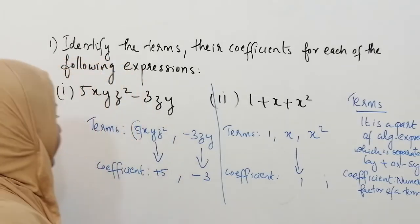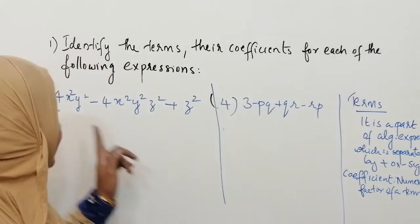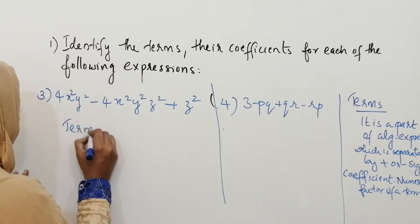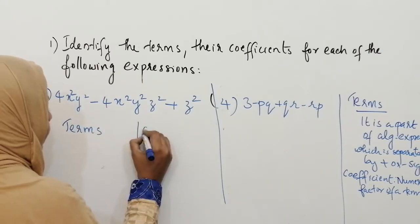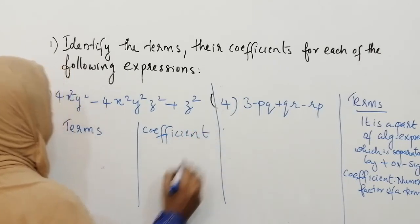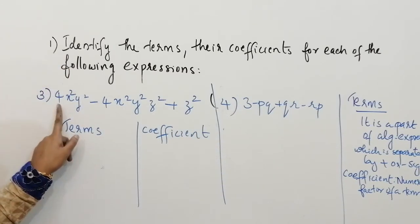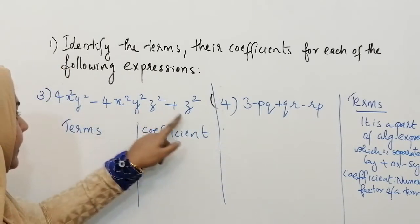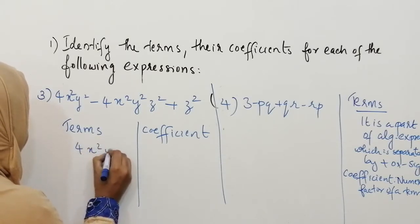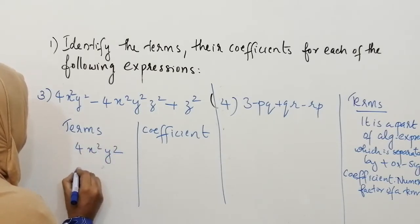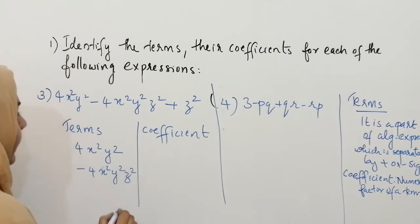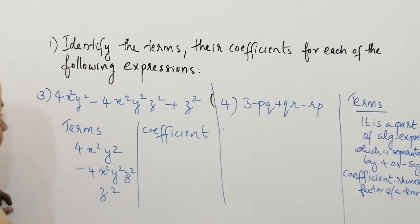Now we can do the third question. In this question there are three terms. The first term is 4x²y², the second term is minus 4x²y²z², and the third term is z².